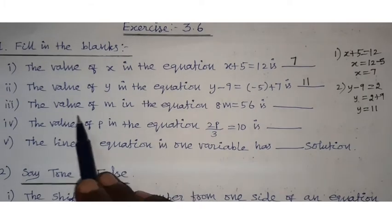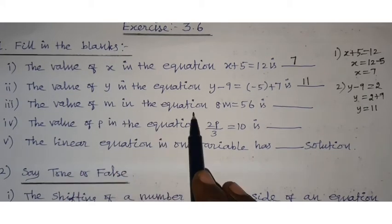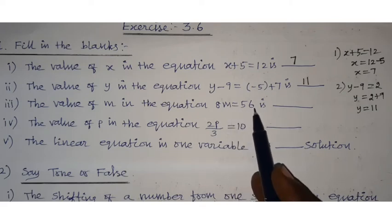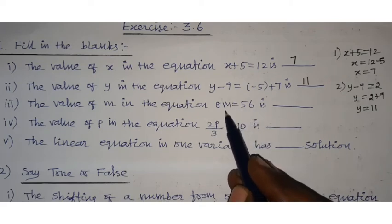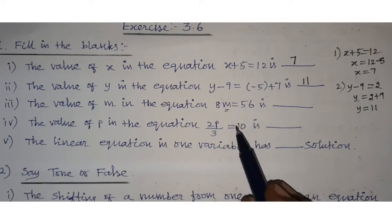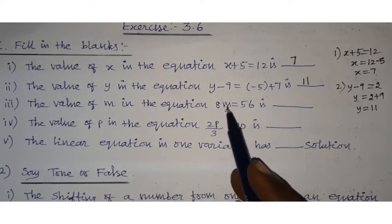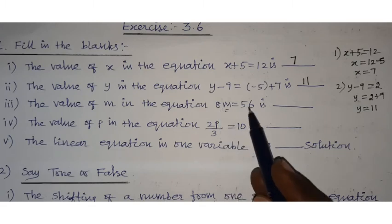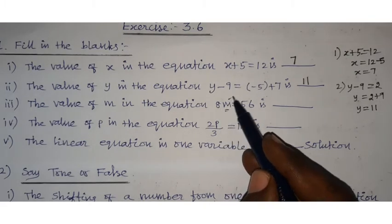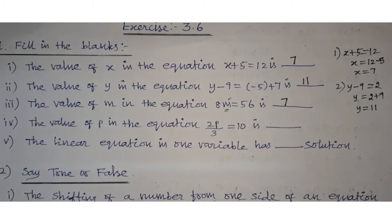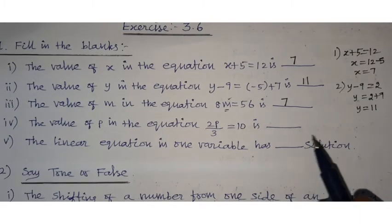Third question: 8 into m equals 56. What number times 8 gives 56? From the 8 times table, 8 sevens are 56, so in place of m the value is 7.